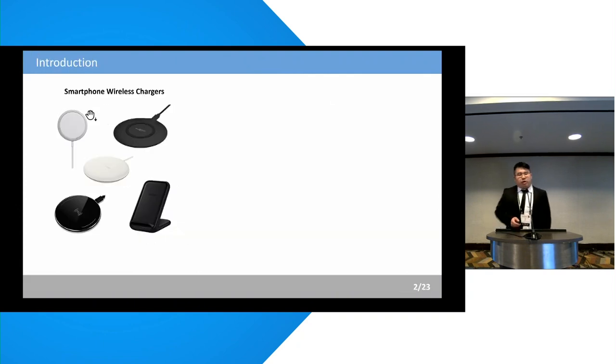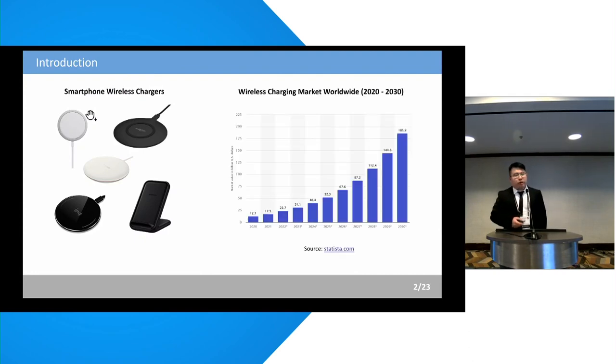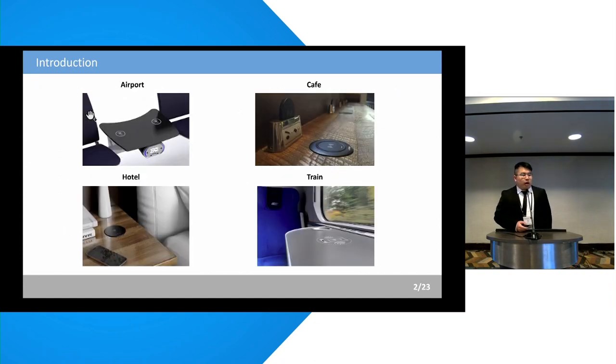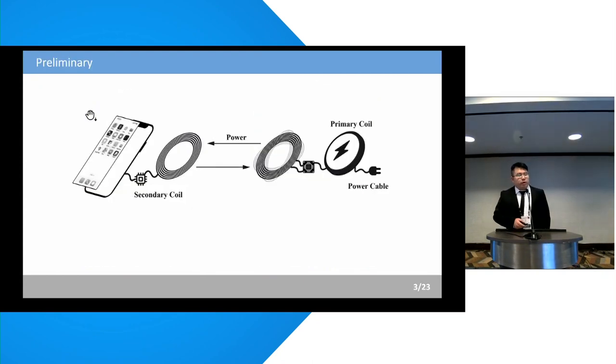Nowadays, smartphone wireless chargers have become much more popular in our daily life for battery charging. According to a recent study, the global wireless charging market will exceed $180 billion by the end of 2030. Wireless charging stations are widely deployed in public facilities such as airports, cafes, hotels, and public transportation. Typically, wireless chargers use electromagnetic induction to transfer power from the charger's primary coil to a secondary coil in the smartphones. During the charging process, the smartphone continuously communicates with the wireless chargers through the Qi protocol, and the control unit in the wireless charger will take the feedback and adjust the charging voltages.